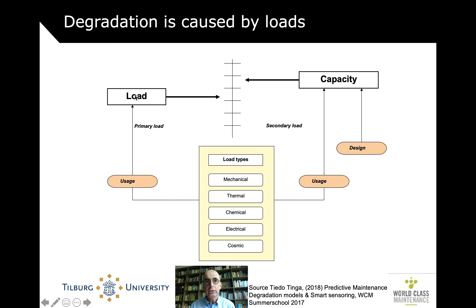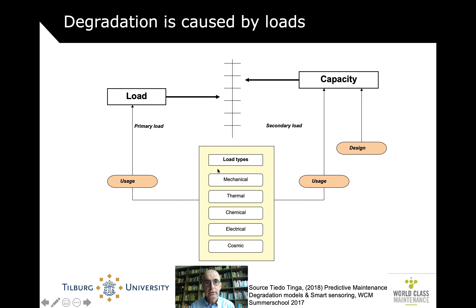There is a load and there is a capacity. As soon as the magnitude of the load becomes greater than the capacity, we start having degradation. Also, when the load is nearing the capacity, there is a non-linear relation between the load and the degradation. There are different kinds of loads. According to Tito, there are only five: mechanical, thermal, chemical, electrical, and cosmic — and he's probably right.